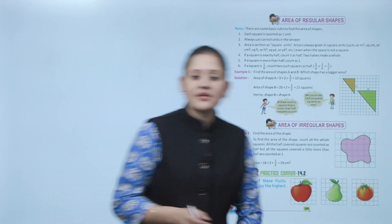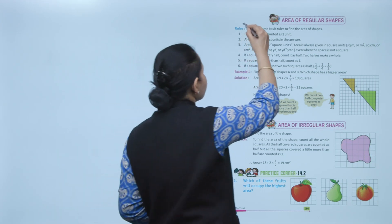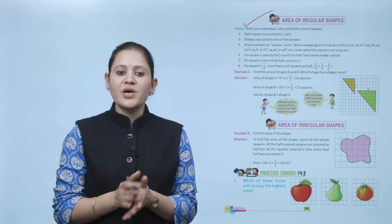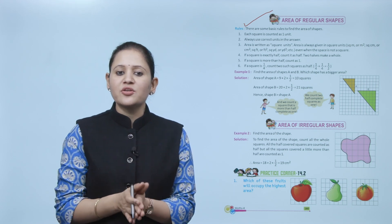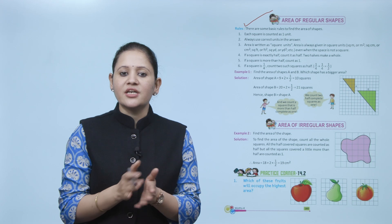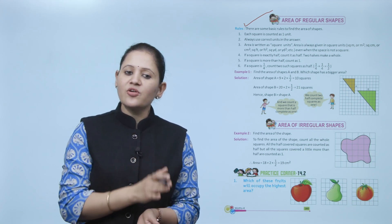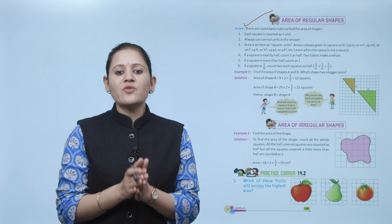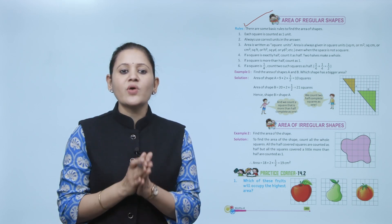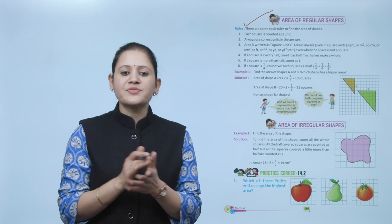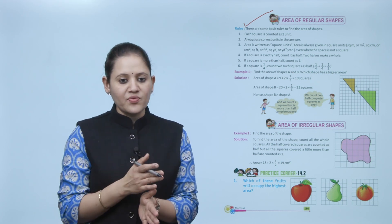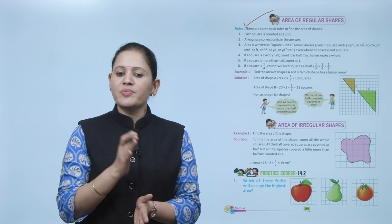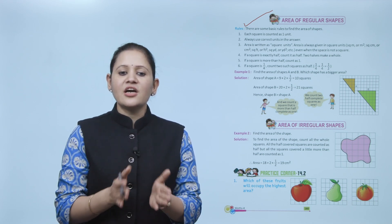Next is area of a regular shape. Rules: each colored square counts as one unit. Always use the correct unit in the answer — area is written in square units like centimeter square or meter square. If a square is exactly half, count it as half; two halves make a whole. If a square is more than half, count it as one. If a square is one-fourth, count two such squares as half.